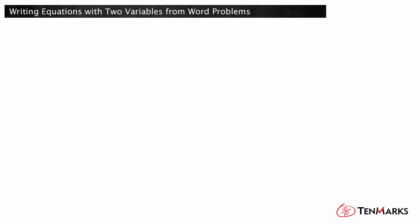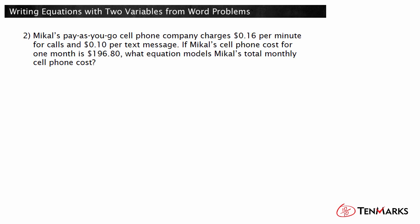Let's take a look at the next problem. Mikal's pay-as-you-go cell phone company charges $0.16 per minute for calls and $0.10 per text message. If Mikal's cell phone cost for one month is $196.80, what equation models Mikal's total monthly cell phone cost? Define the variables: let x represent the number of minutes, and let y represent the number of text messages. This word problem represents a cost function.